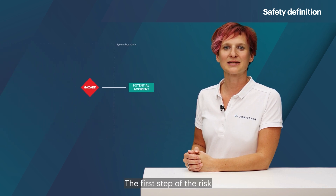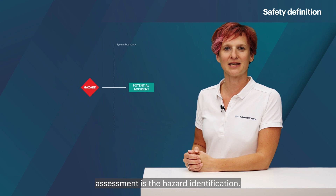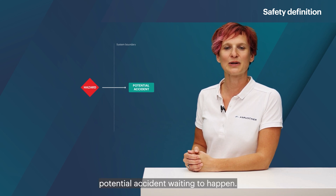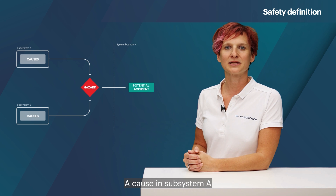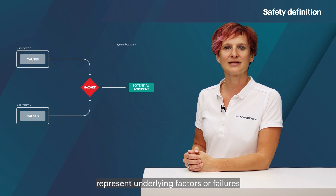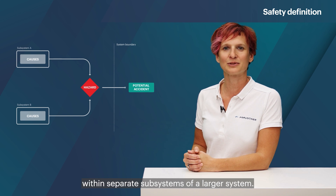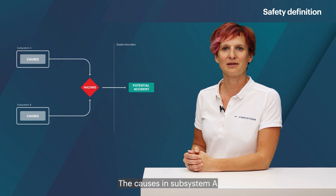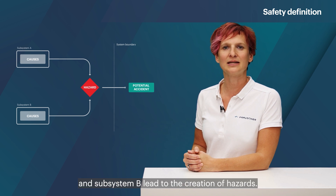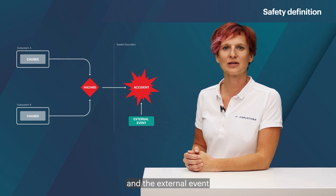The first step of the risk assessment is the hazard identification. A hazard is a potential accident waiting to happen. A cause in subsystem A and a cause in subsystem B represent underlying factors or failures within separate subsystems of a larger system. The causes in subsystem A and subsystem B lead to the creation of hazards. The combination of the hazards and the external event results in an accident.